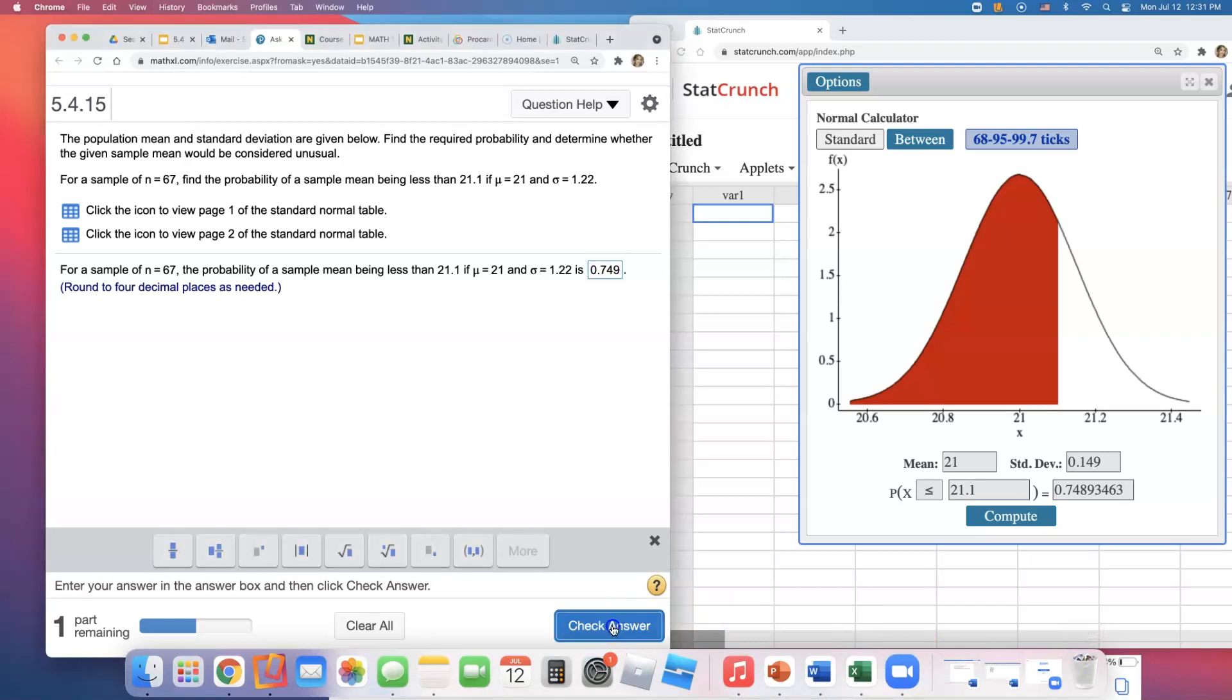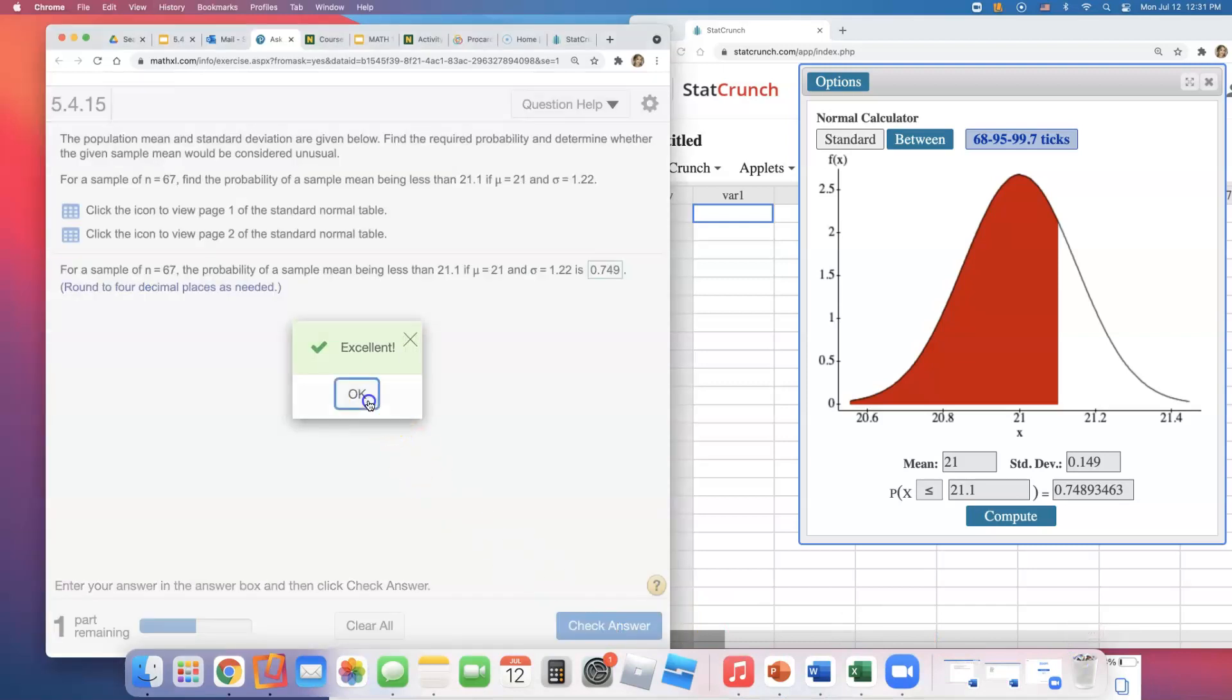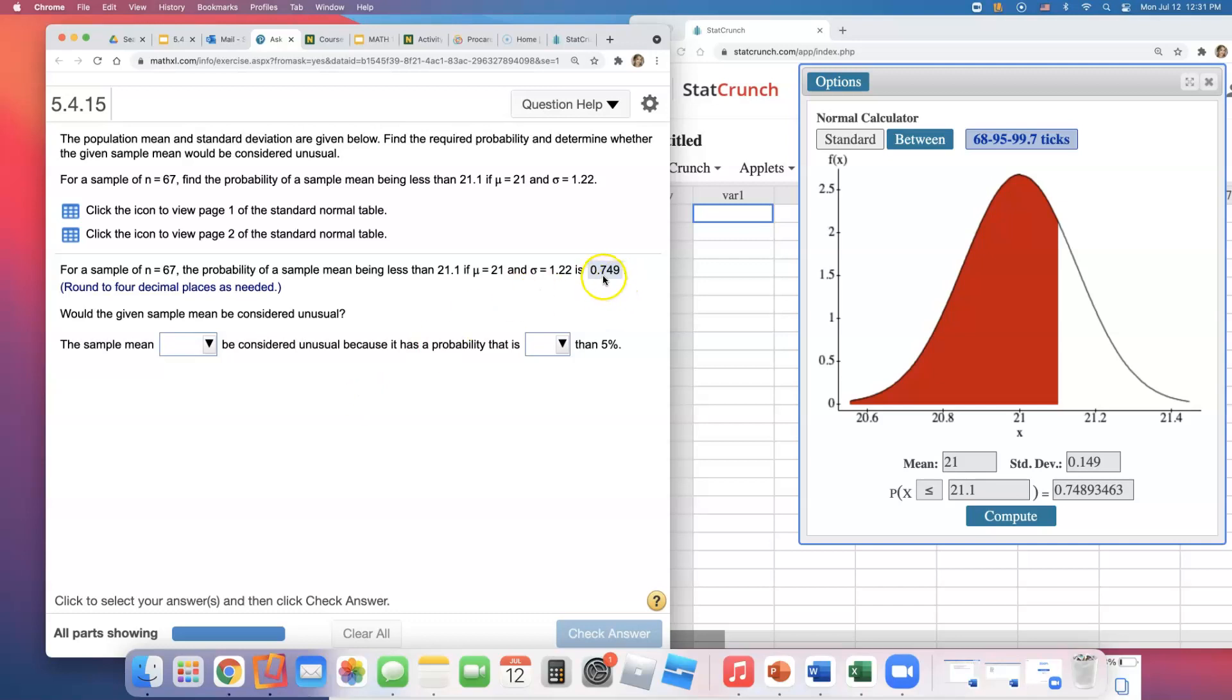That's 75 percent, which is not unusual. Anything less than five percent would be considered unusual, but this is 75 percent. It would not be considered unusual because it has a probability greater than five percent. If you got a number smaller than 0.05, then it would be considered unusual.